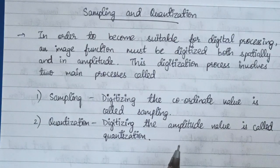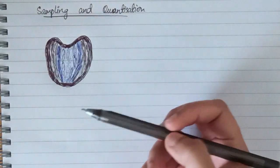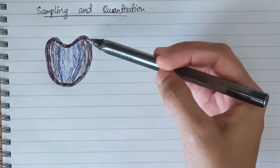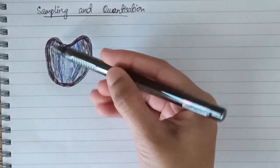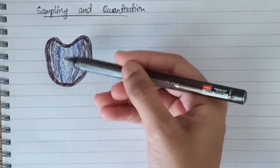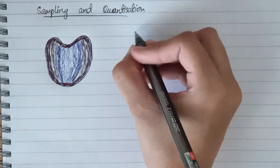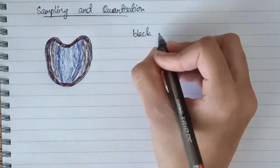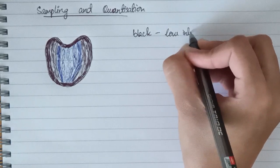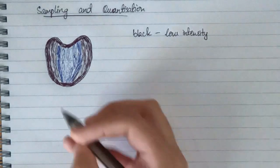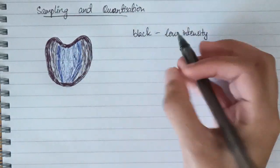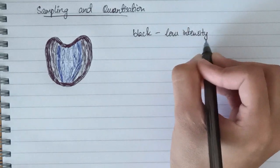For an image to be made suitable for digital processing it needs to be sampled and quantized. Now let's understand this concept with the help of an example. Here I've drawn an image which has different intensity values. The black color represents low intensity, and the gray portion represents slightly higher intensity.